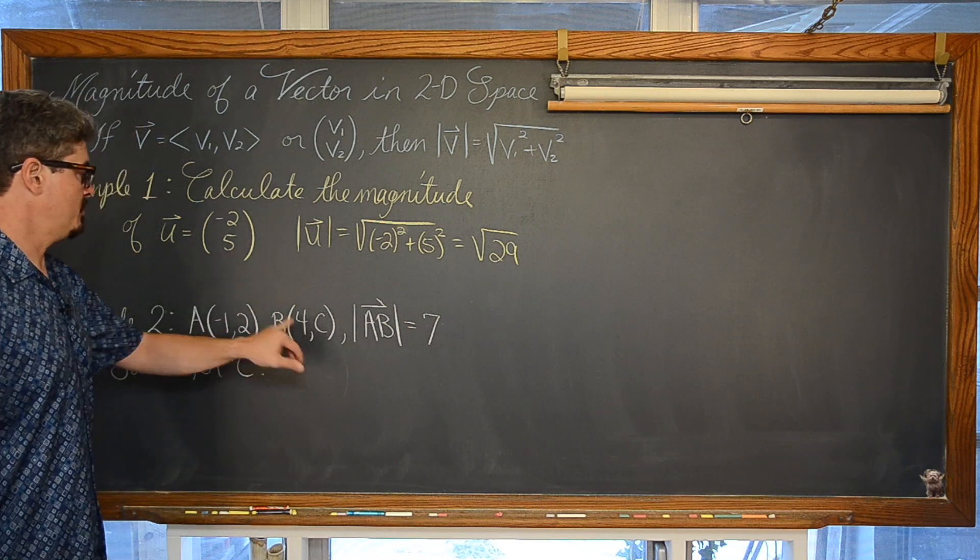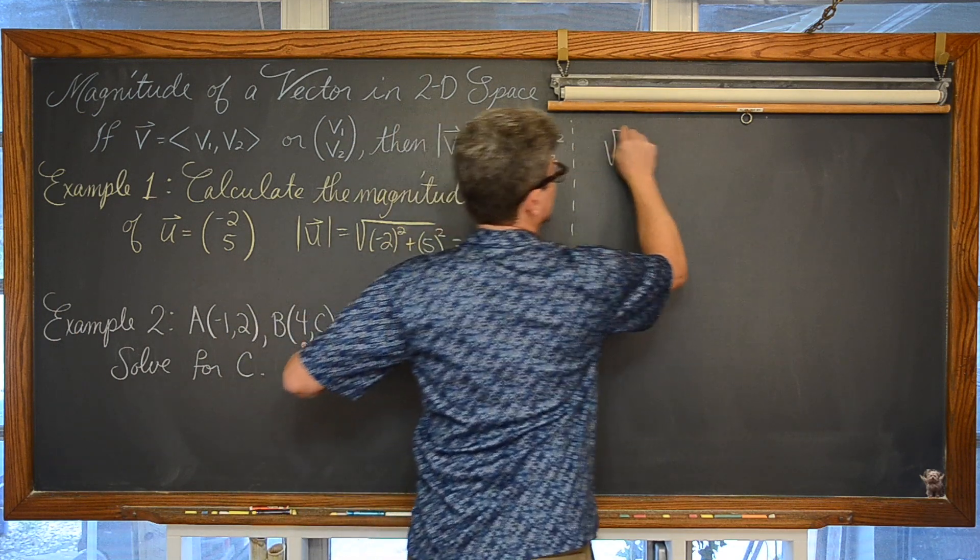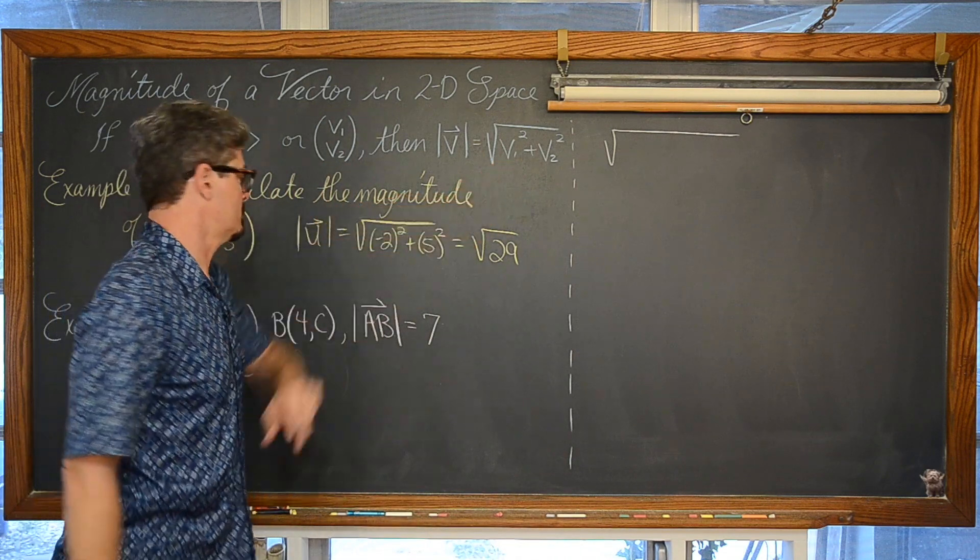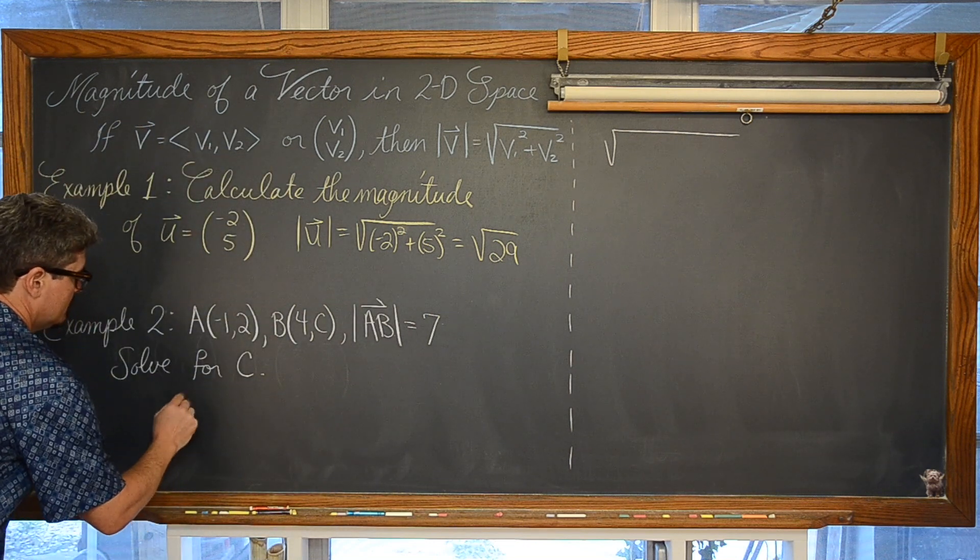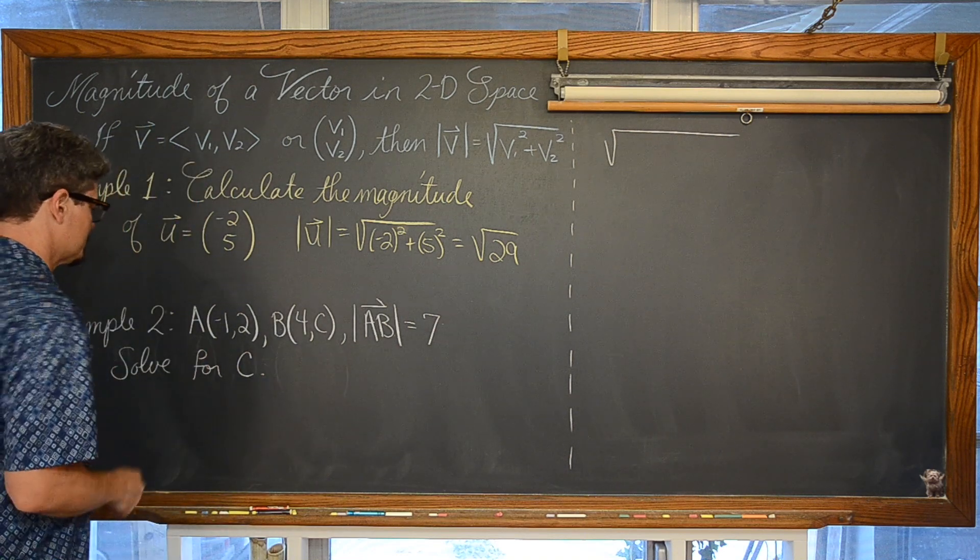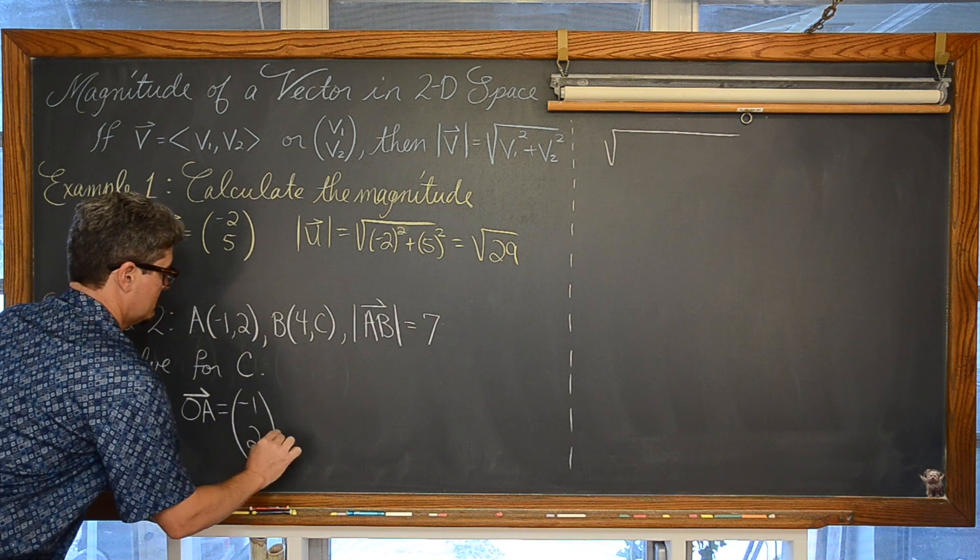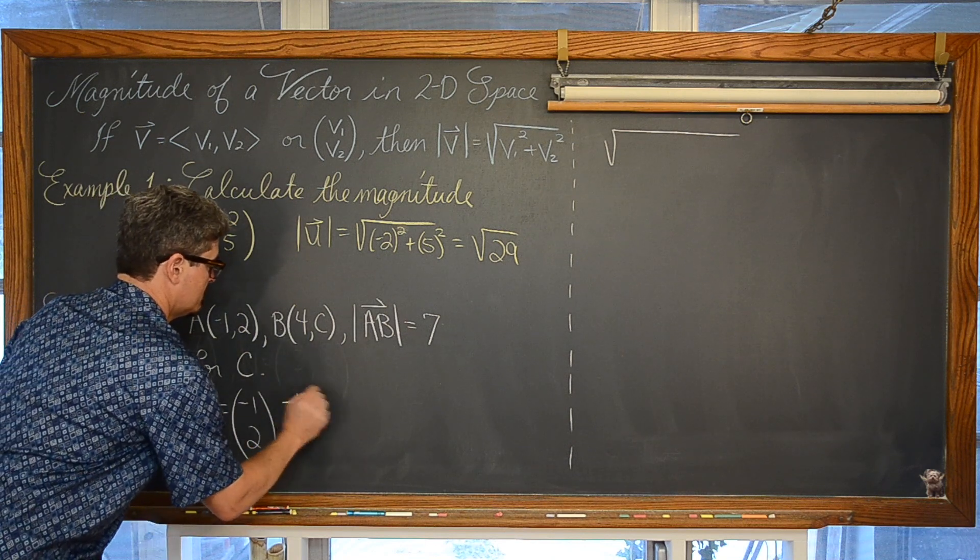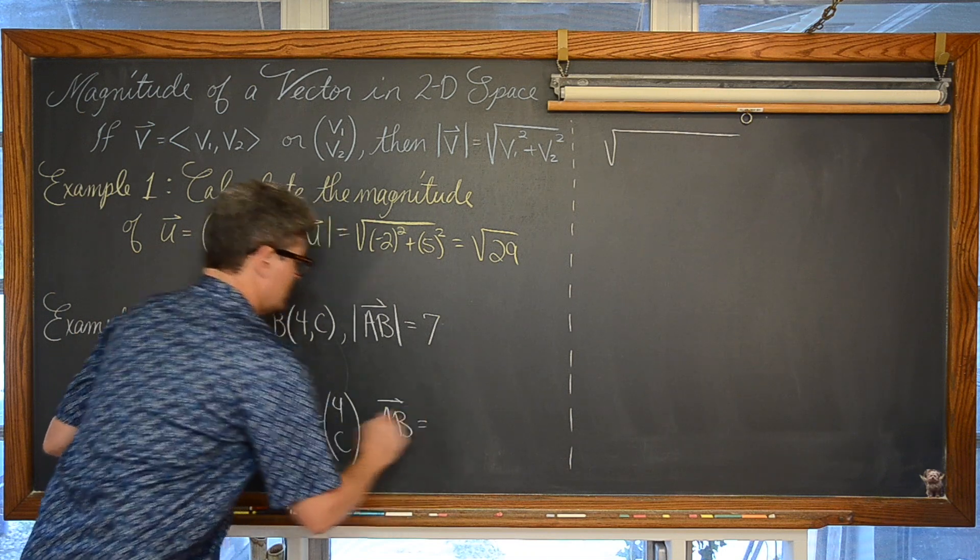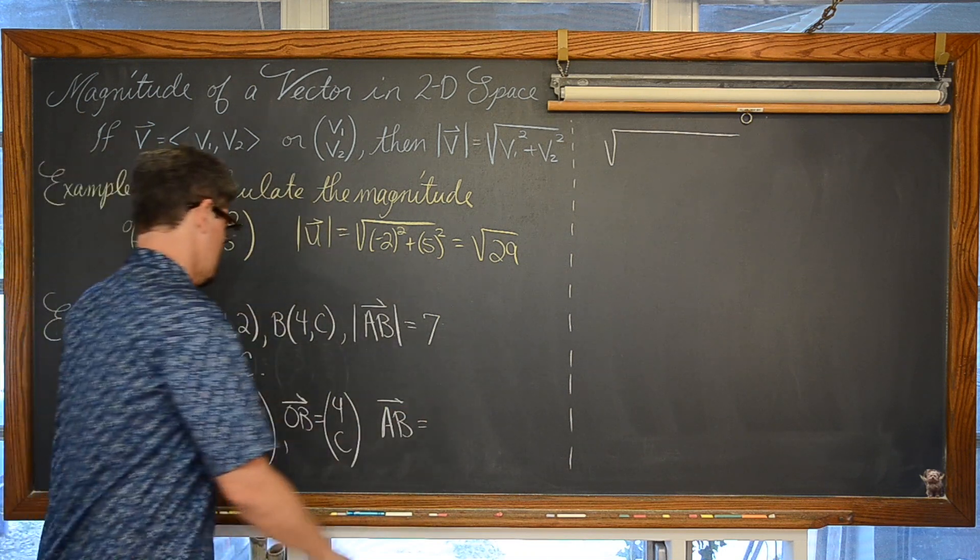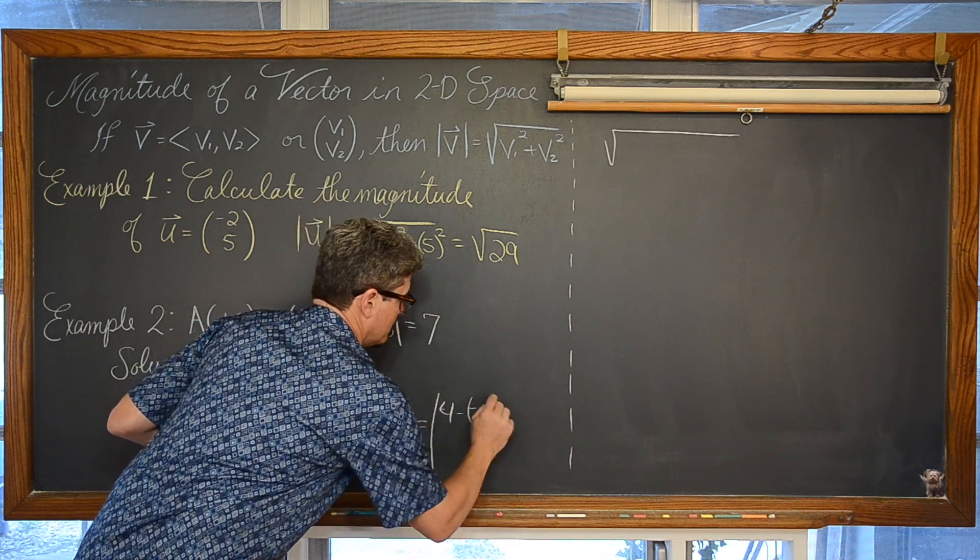So the magnitude of vector AB is going to be equal to the square root of our horizontal distance squared, V sub 1 squared. That would be nice if we actually had notation for vector AB. So I am just going to stay consistent with the textbook I am teaching out of. They like to point out that if this is A, then vector OA is negative 1, 2. Vector OB is 4, C, and therefore vector AB is B minus, basically you are subtracting OB with vector OA. So we have 4 minus negative 1, and C minus 2.